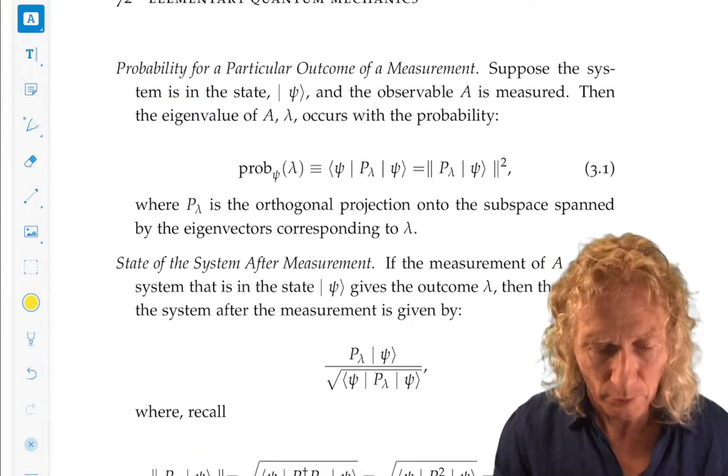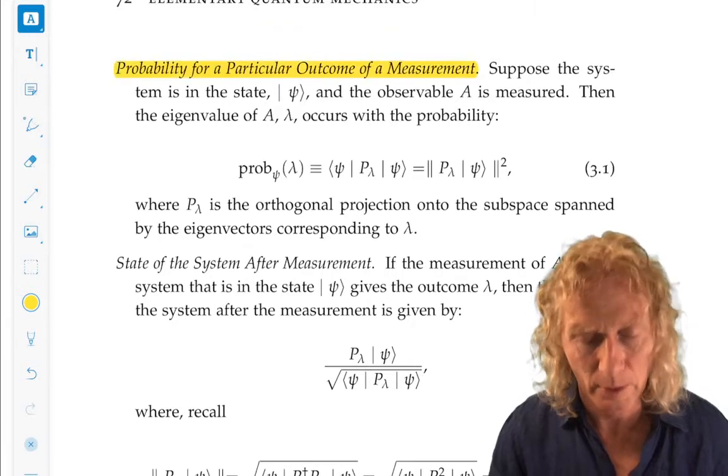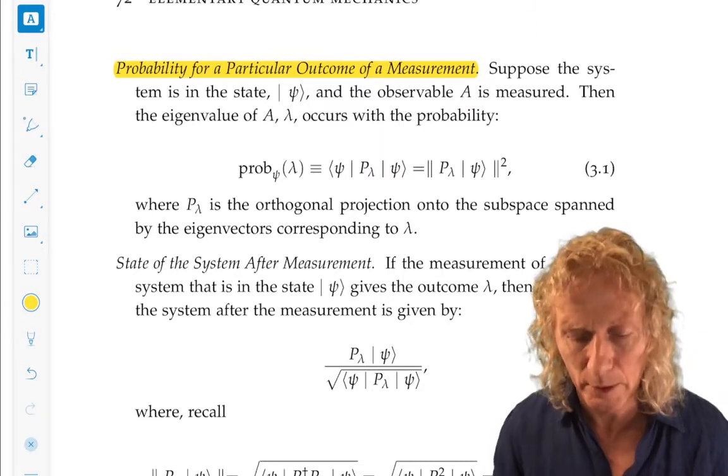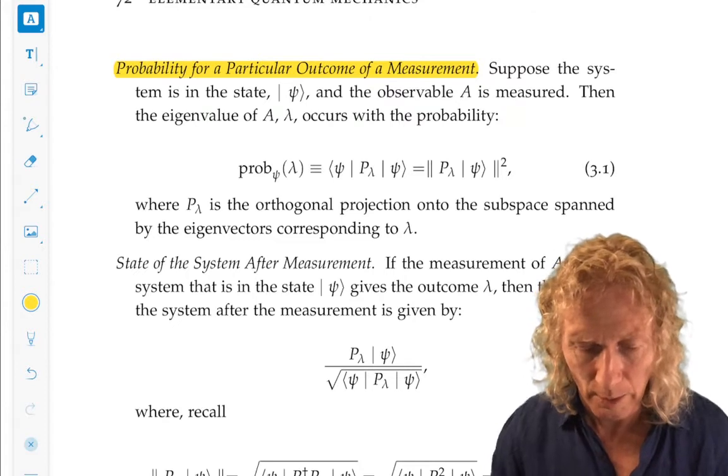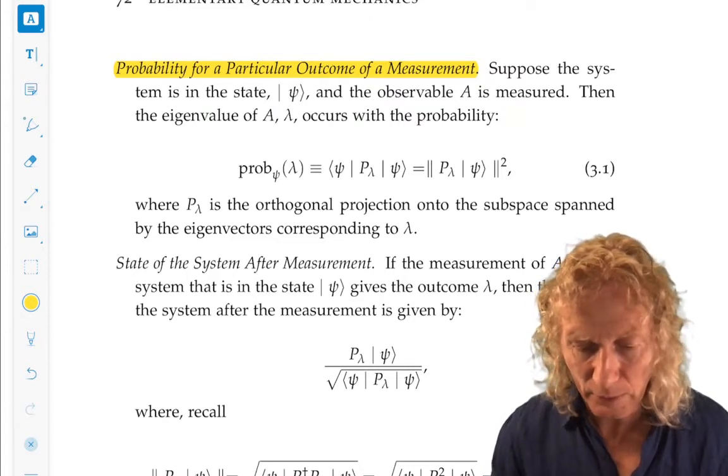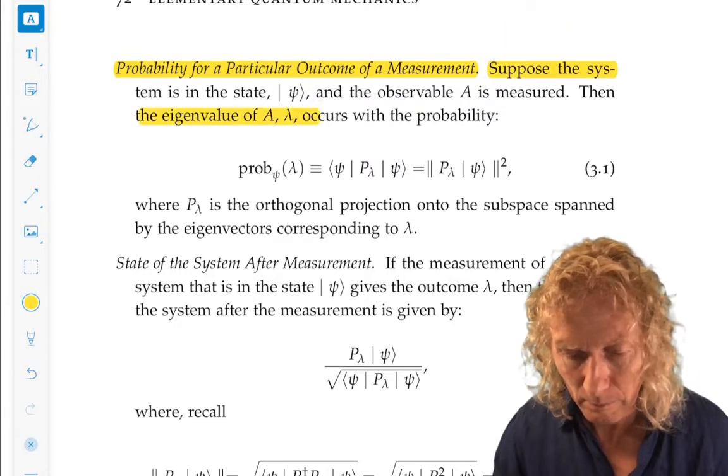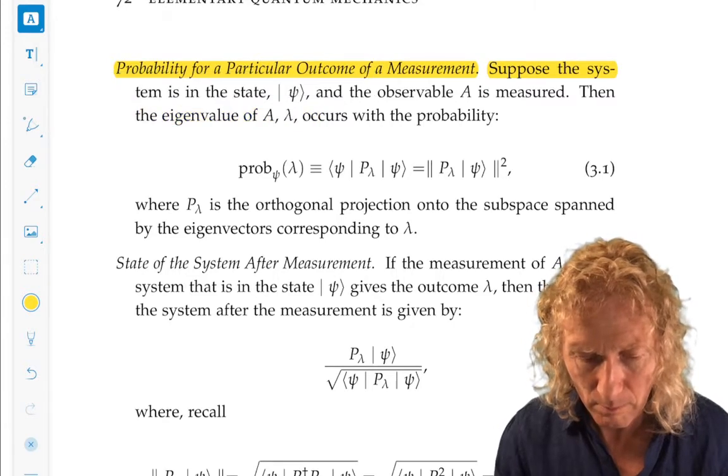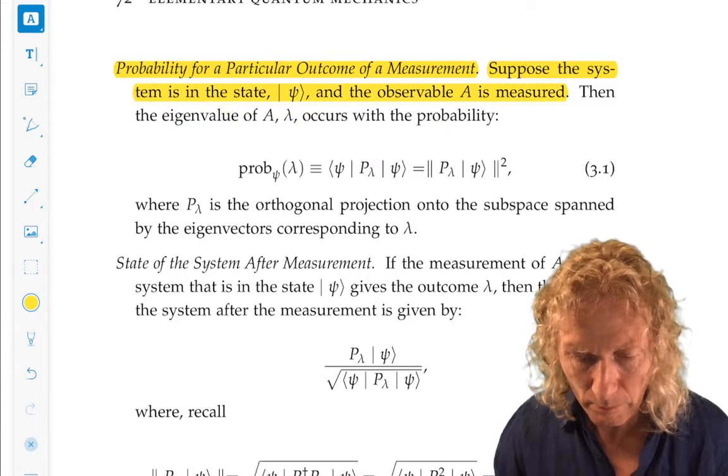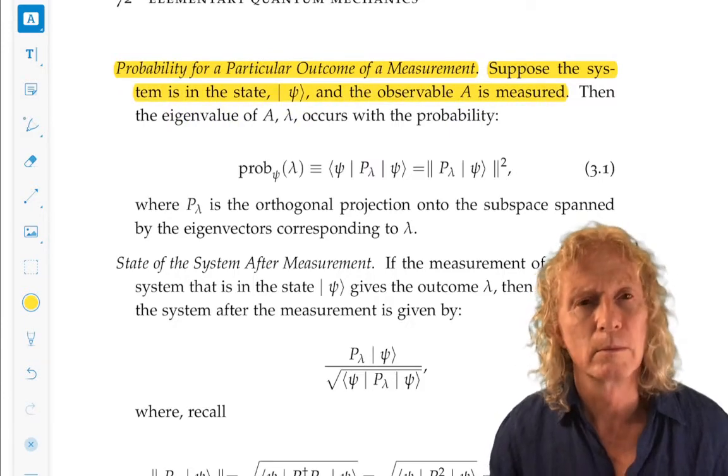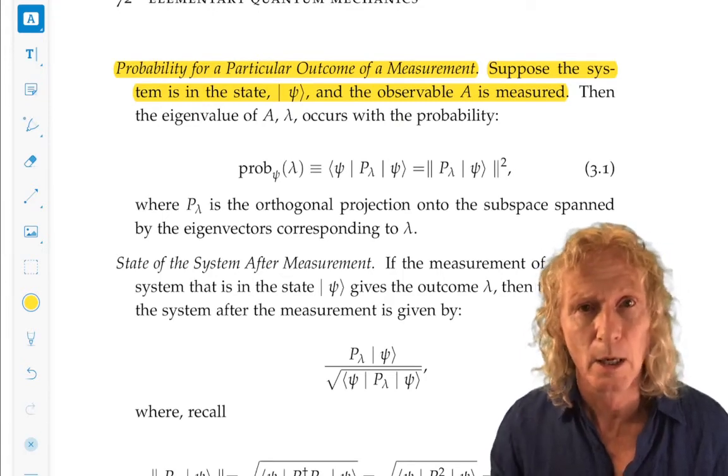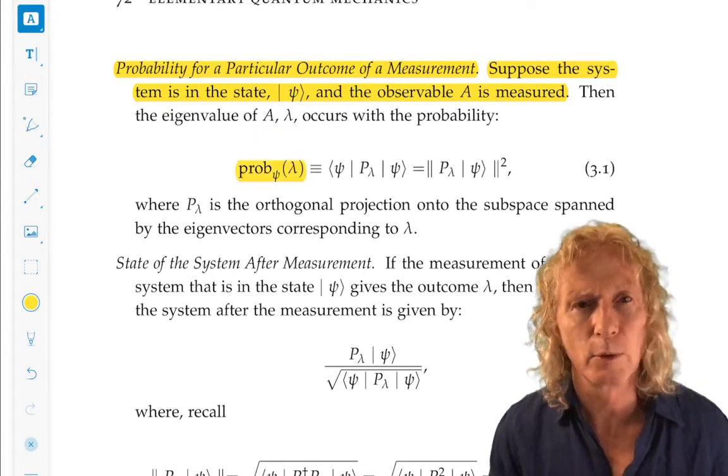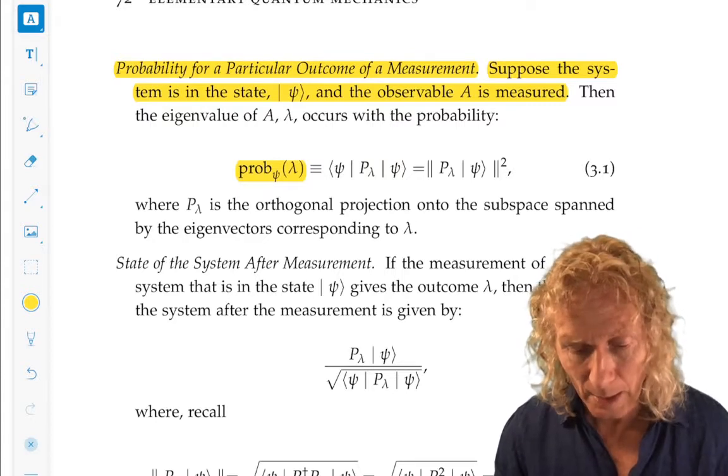The probability. Eigenvalues are the outcome of measurement. What is the probability for measuring a particular eigenvalue? Suppose the system is in the state psi. And the observable A is measured. Then the eigenvalue of A, we'll call it lambda, occurs with a given probability. The probability for measuring lambda in the state psi.